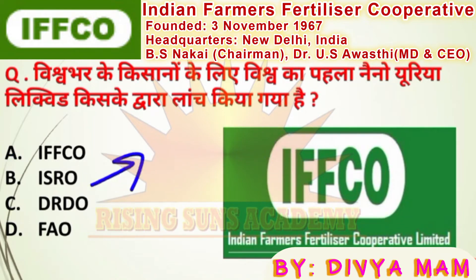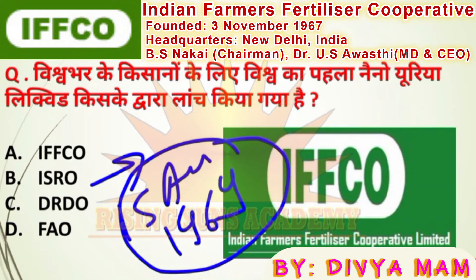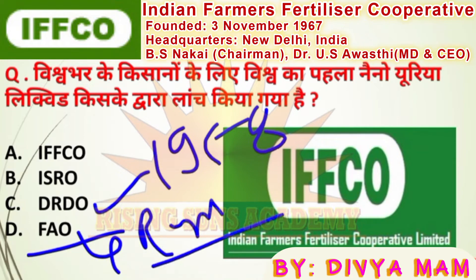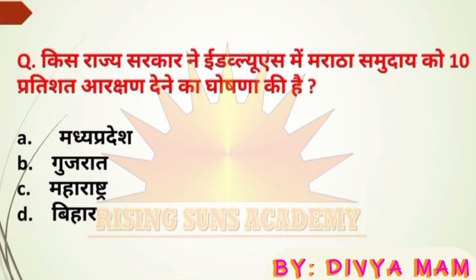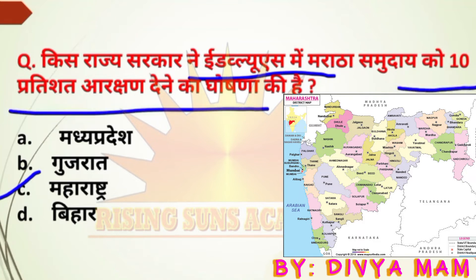ISRO was established on 15 August 1969. This is asked frequently. DRDO was established in 1958. FAO — the Food and Agriculture Organization — has its headquarters in Rome. These are important organizations to remember for exams.